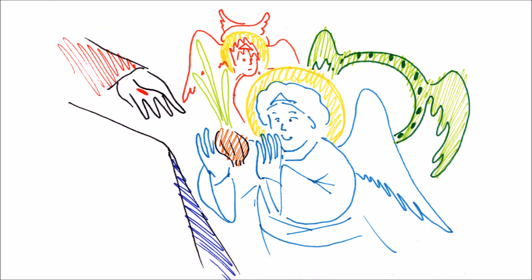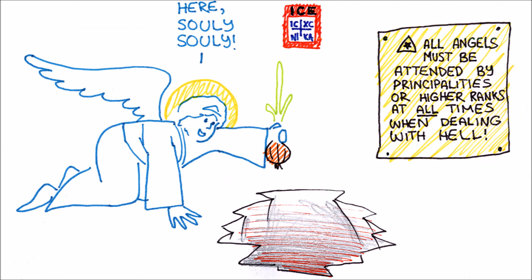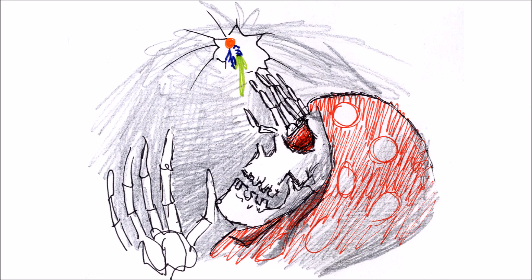The Lord is, by this point, bored with his beloved angels' bickering. So he tells the guardian angel to dip said onion into hell and try to pull the woman out of it. The guardian angel does so, and the woman, seeing the onion, immediately grabs it.